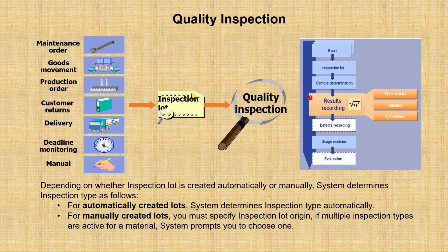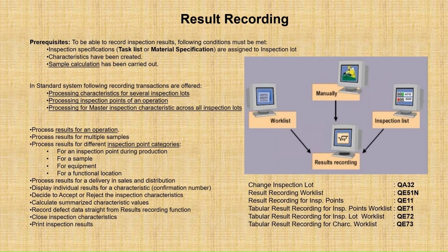Since the lock has been triggered — whether it is an auto-generated lock or you are creating it manually — the next task is to do the result recording. We have multiple transactions for the same process, so even for the result recording we have multiple transactions which can be used. The most frequently used transaction is QA32. There are a few other transactions specifically for result recording as well. If we are using an inspection point, we normally use the QE51N transaction. Let's see in the system how these transactions can be used.